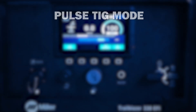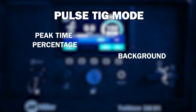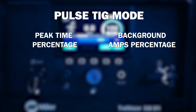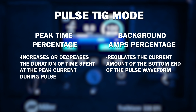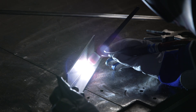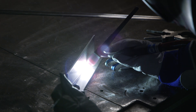When Pulse TIG mode is activated, it unlocks two additional advanced welding features: Peak Time Percentage and Background Amps Percentage. These settings adjust the shape of the pulsed GTAW waveform. The Peak Time Percentage setting increases or decreases the duration of time spent at the peak current during the pulse. The Background Amps Percentage setting regulates the current amount at the bottom end of the pulse waveform, expressed as a percentage of the preset current. The Trailblazer 330 engine-driven welder delivers the productivity and quality benefits of Pulse TIG welding right to the job site.